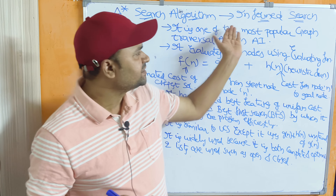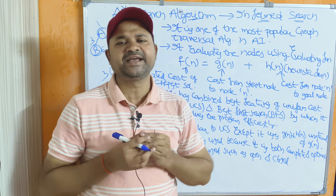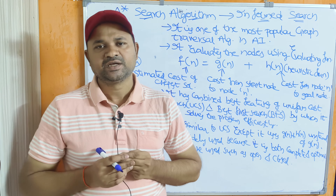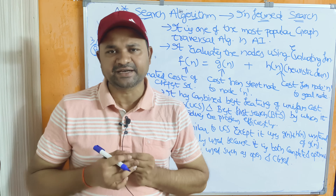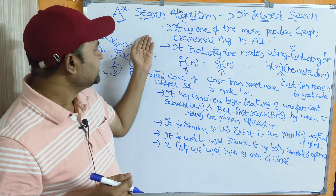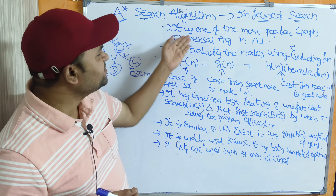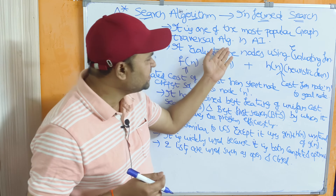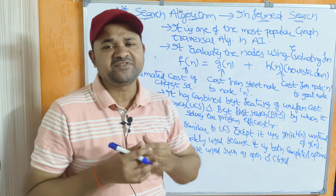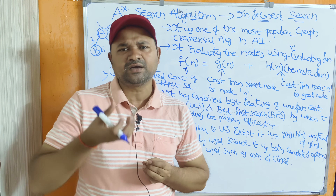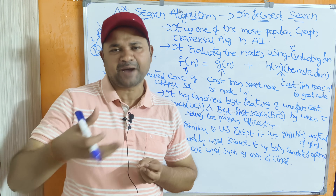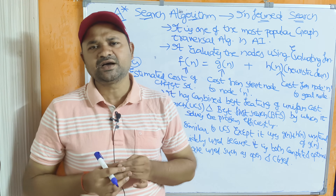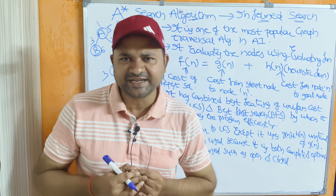The A* algorithm is an informed search technique, which means heuristic functions are needed here. It is one of the most popular graph traversal algorithms in artificial intelligence. In order to find the best path or cheapest cost path, A* is the best algorithm in artificial intelligence.